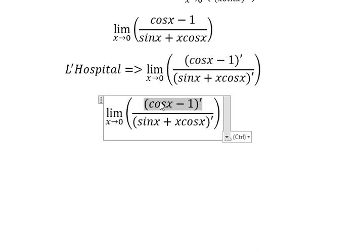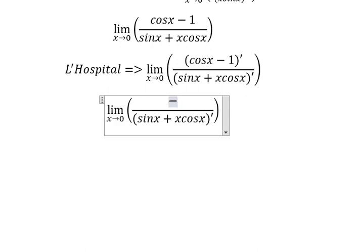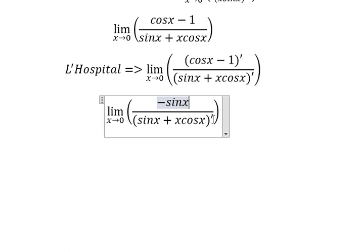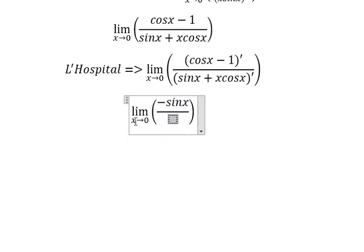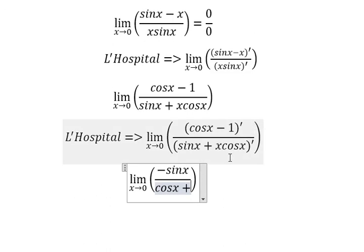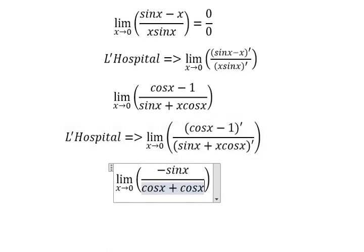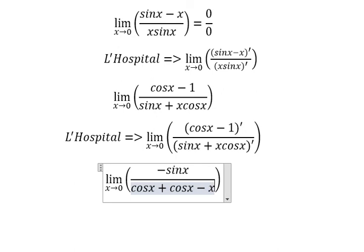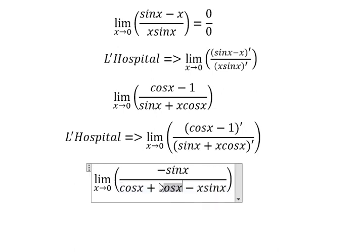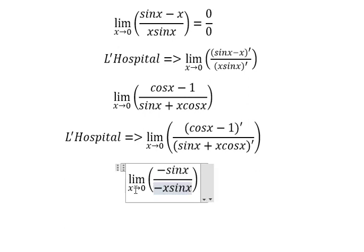The first derivative of cosx is negative sinx. Then we do the first derivative of sinx, which is cosx. We apply the product rule so we get cosx, then we do first derivative of x and we get negative x sinx. Cosx and cosx gives us 2 cosx.